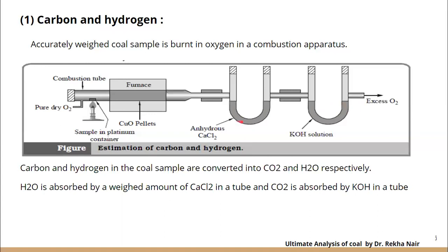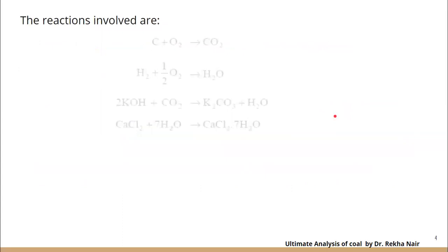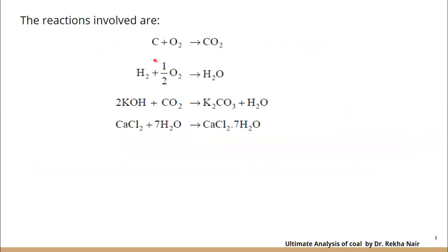There will be an increase in weight due to these absorptions. The increase in weight of the calcium chloride tube indicates the amount of water absorbed, and the increase in weight of the KOH tube indicates the amount of CO2 absorbed. The increase in weight will be determined. The reactions involved are: carbon reacts with oxygen to form carbon dioxide; hydrogen reacts with oxygen to form water; carbon dioxide is absorbed in KOH solution to form K2CO3; and water is absorbed by calcium chloride.